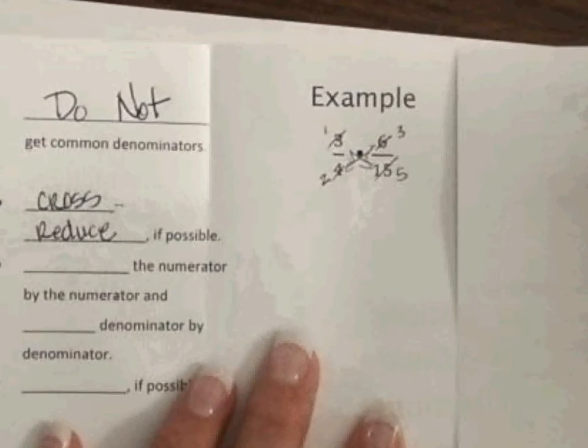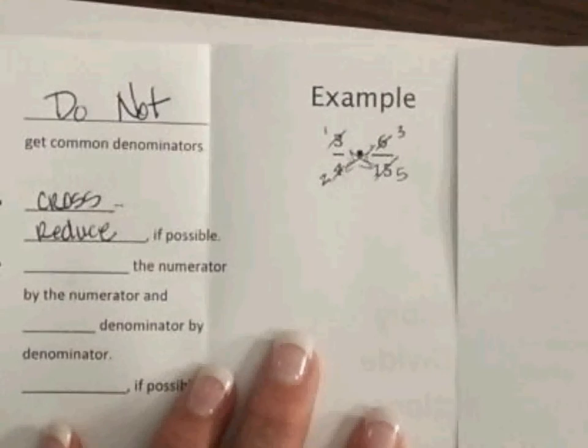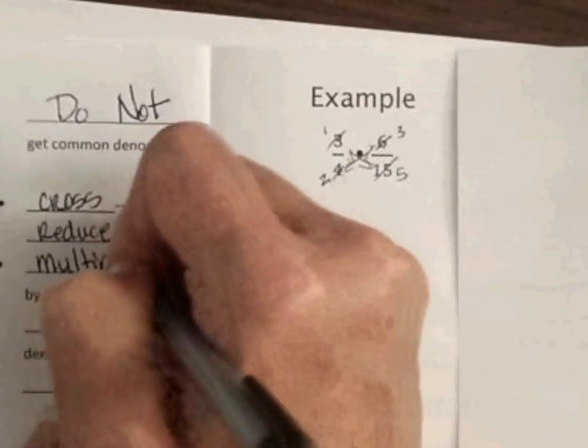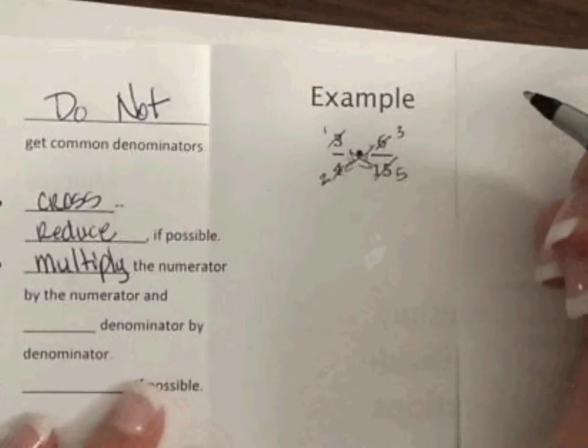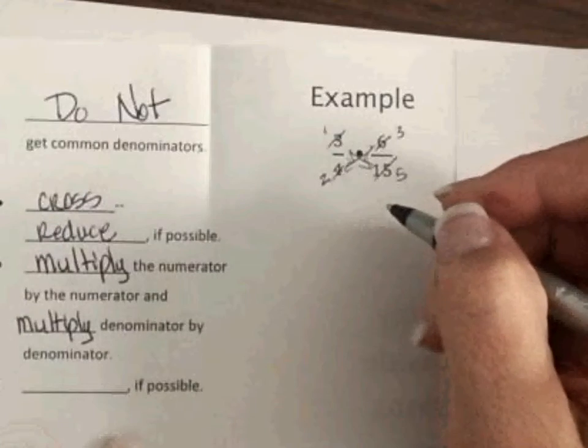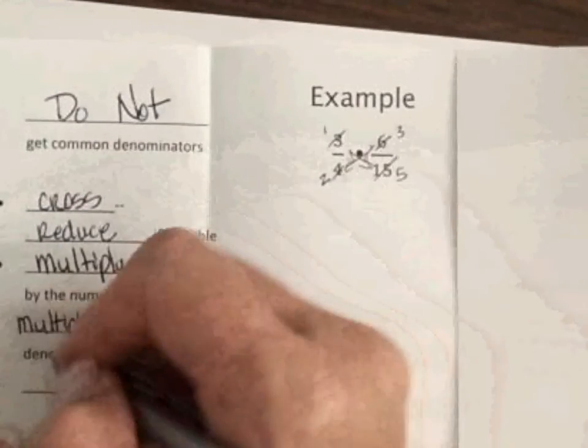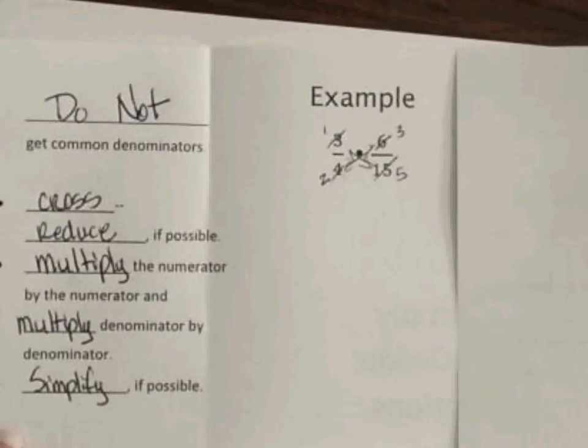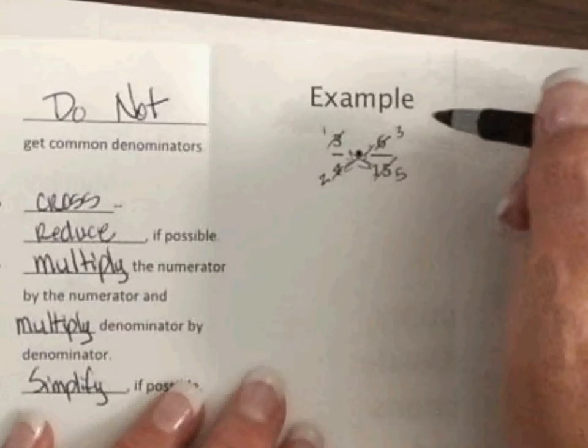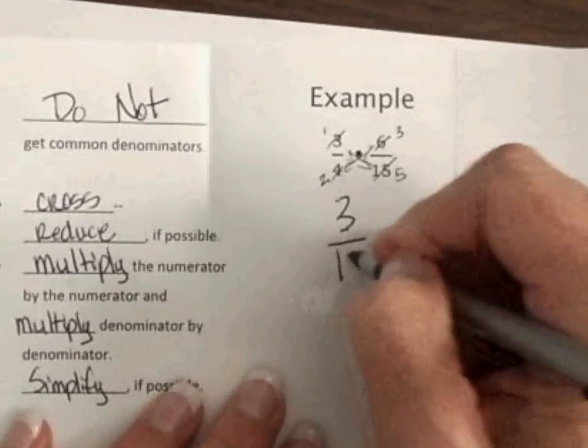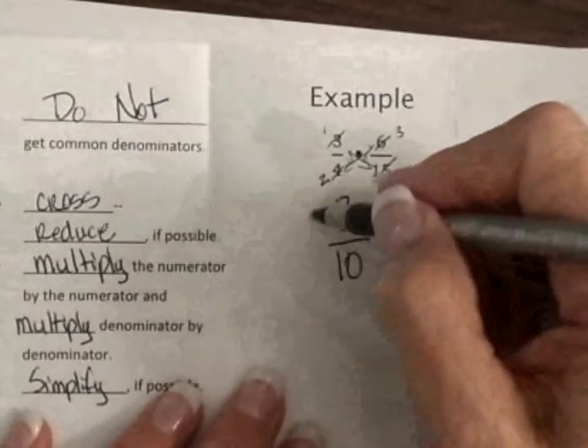Okay, I'm checking myself. And so, I've cross-reduced. So, now I'm going to multiply the numerator by the numerator and multiply the denominator by the denominator. And always, with fractions, simplify if possible. So, I'm multiplying my numerator by the numerator. One times three is three. Two times five is ten. I cannot simplify.